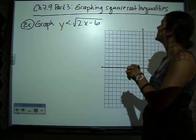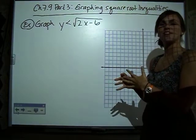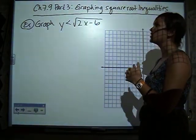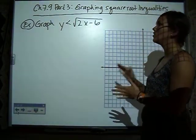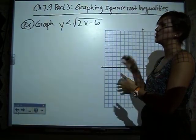Alright, so graphing inequalities being with square roots is no different than graphing any other inequality with lines or quadratics. There's going to be a dot or dash choice. There's going to be shading happening. The only thing that we have to be careful of here is staying within our restricted domain and range.